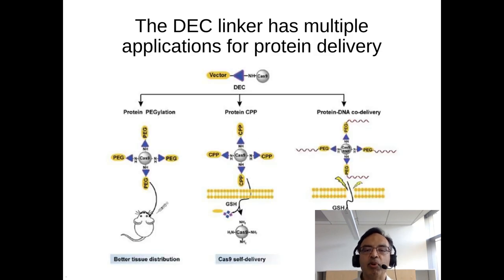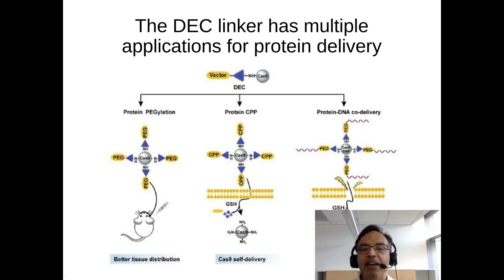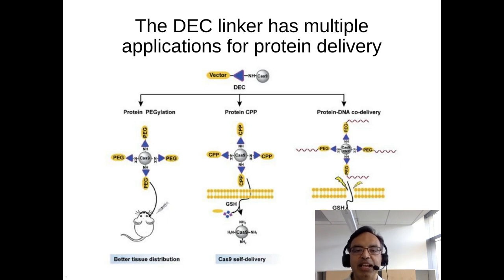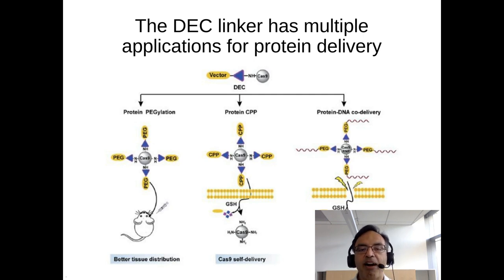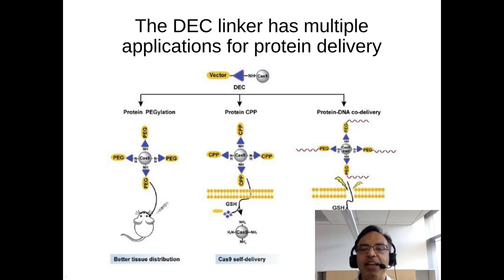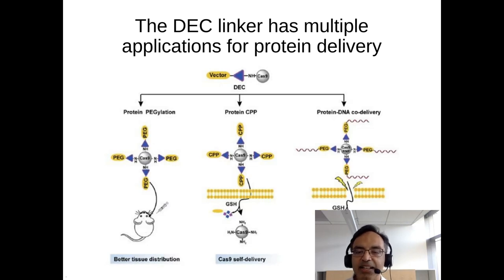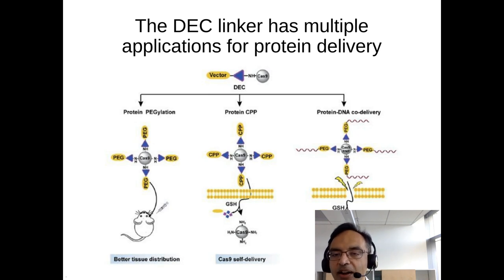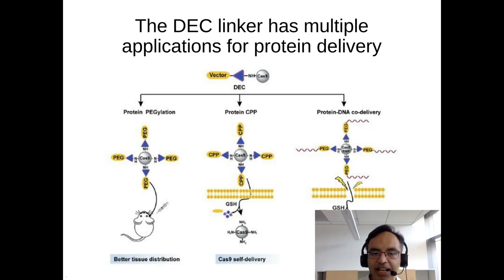The DEC linker has numerous applications for protein delivery. We've used it for three different applications — I'll talk about two today. The first is using it to enhance the diffusion of proteins in brain tissue via protein PEGylation. Using the DEC linker, we've been able to conjugate PEG to Cas9, maintain Cas9 activity, and improve its diffusion through brain tissue. In addition, we've been able to conjugate cell-penetrating peptides to Cas9, creating self-delivering Cas9s that are also enzymatically active. We've also conjugated donor DNA to Cas9 to improve HDR rates.